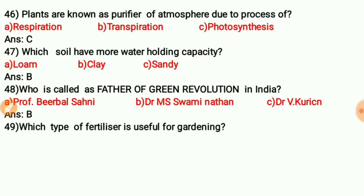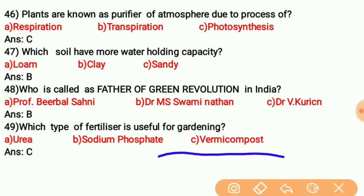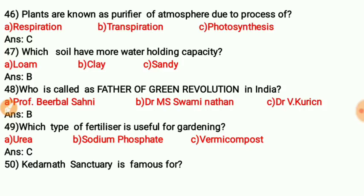Question forty-seven: Which type of fertilizer is used for gardening? The answer is vermicompost. Vermicompost is made using worms and is widely used as fertilizer for gardening because it yields good results.